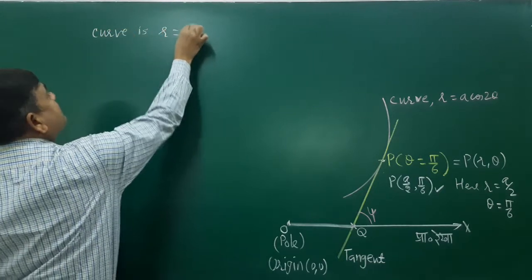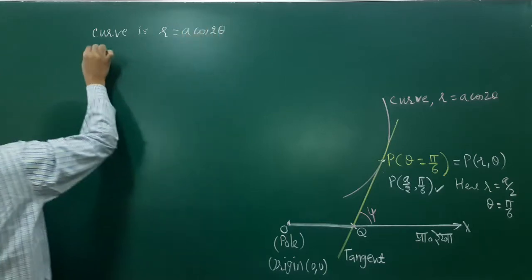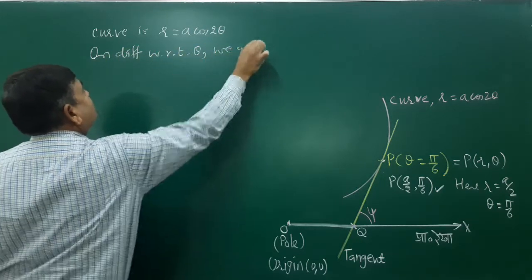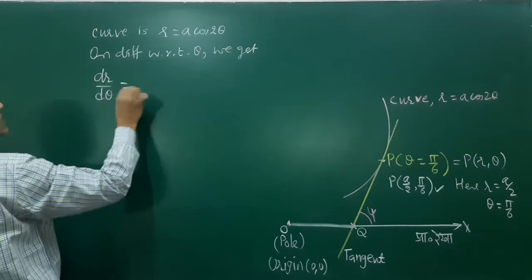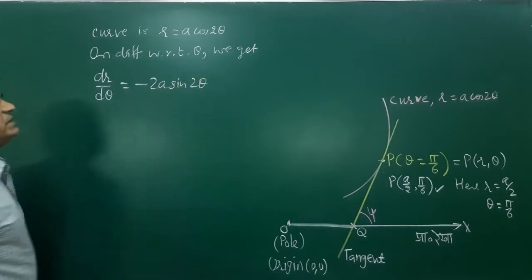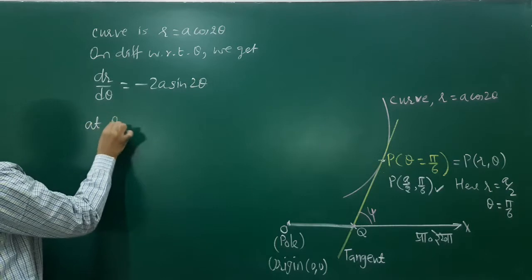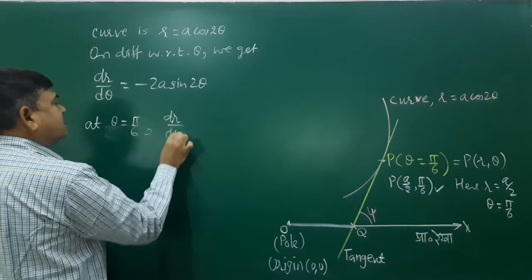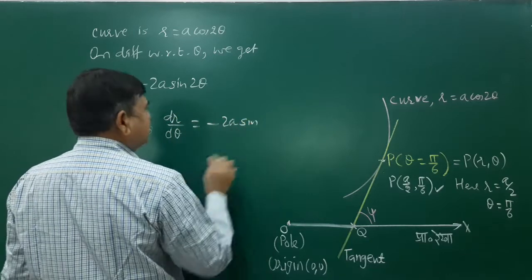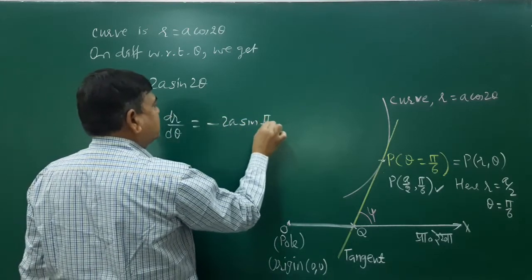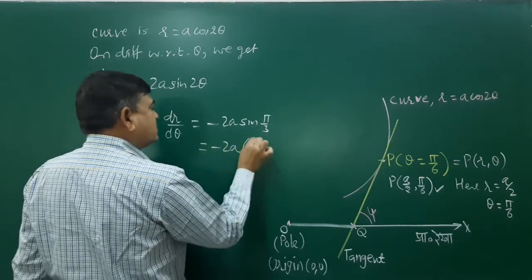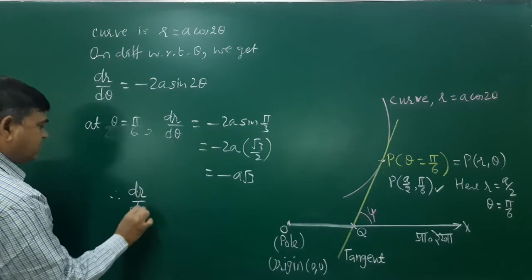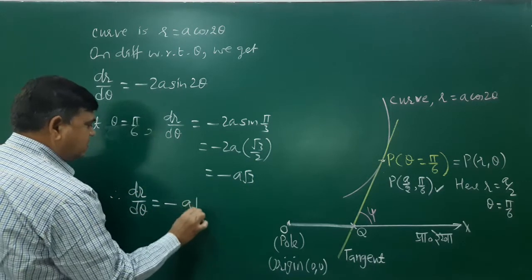The curve is r = a·cos(2θ). Differentiating with respect to θ: dr/dθ = −2a·sin(2θ). At θ = π/6, dr/dθ = −2a·sin(π/3) = −2a·(√3/2) = −a√3.